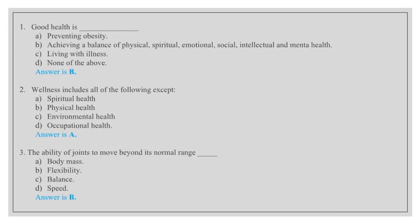Good health is preventing obesity, achieving a balance of physical, spiritual, emotional, social, intellectual and mental health, living with illness, none of the above. Answer is B. Achieving a balance of physical, spiritual, emotional, social, intellectual and mental health.